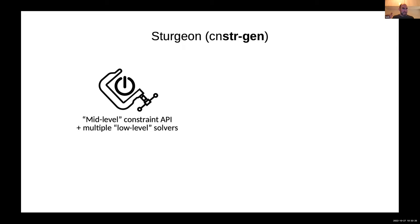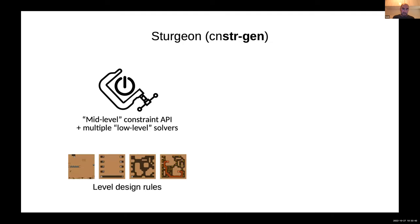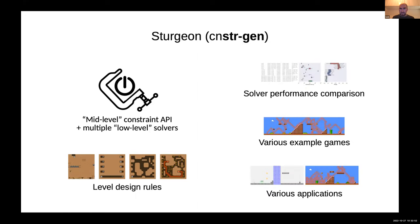The system is built on what I was calling a mid-level constraint API, which allows the use of different kinds of swapping in and out different low-level solvers. This has some advantages because you can compare them and swap them in and out as you need, and this mid-level API allows expressing some level design rules as constraints that can then be solved.